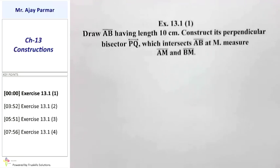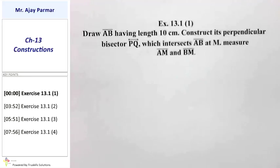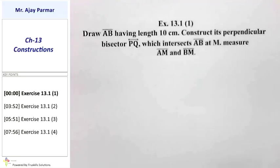In question number 1 of exercise 13.1, we are expected to draw a line segment AB of 10 cm and then construct the perpendicular bisector of line segment AB. We are supposed to find the measurement of line segment AM and line segment BM. Let us see how we draw the perpendicular bisector of a given line segment, also known as the midpoint of the given line segment.